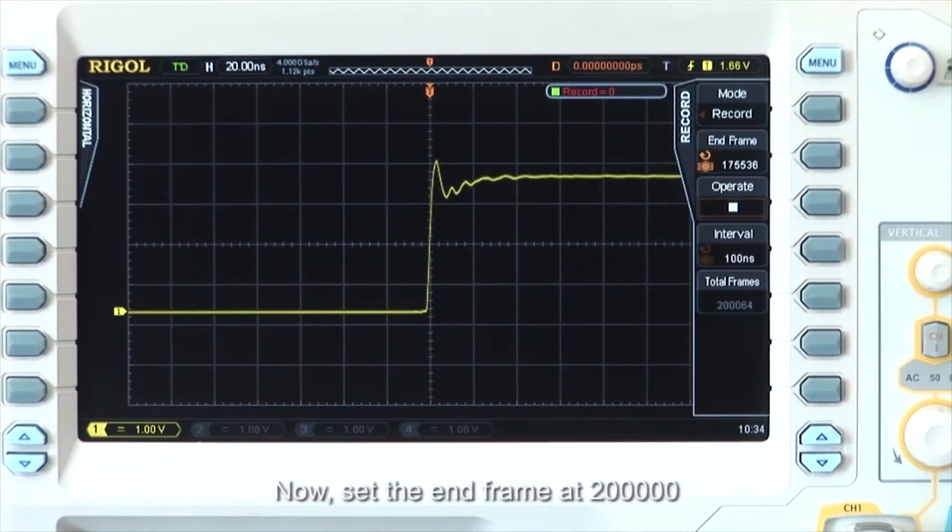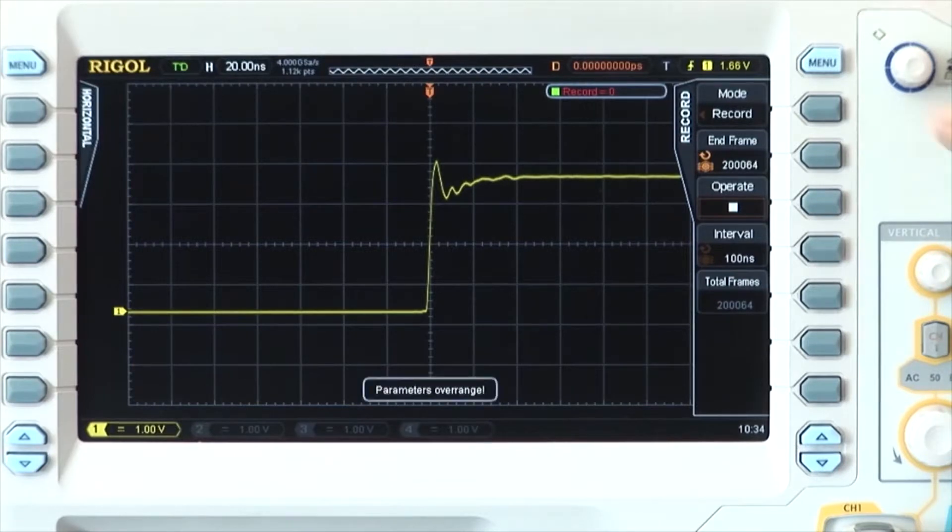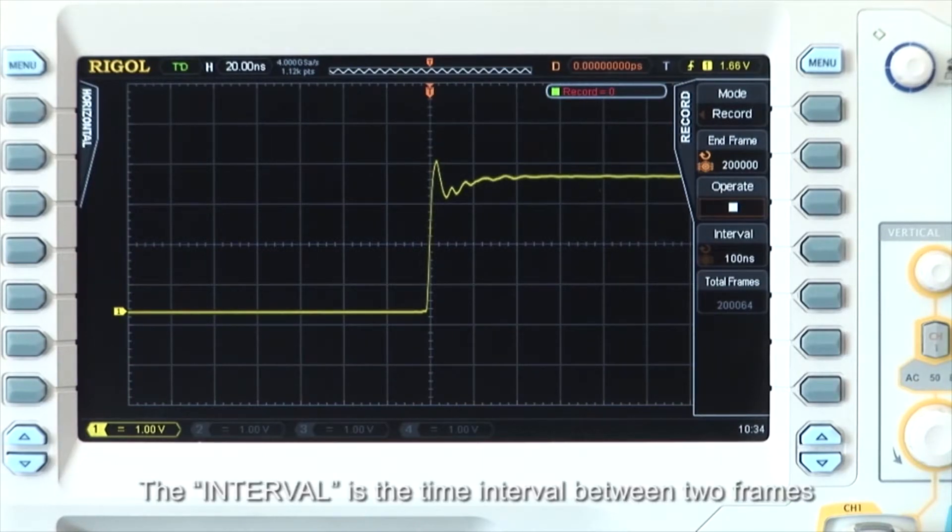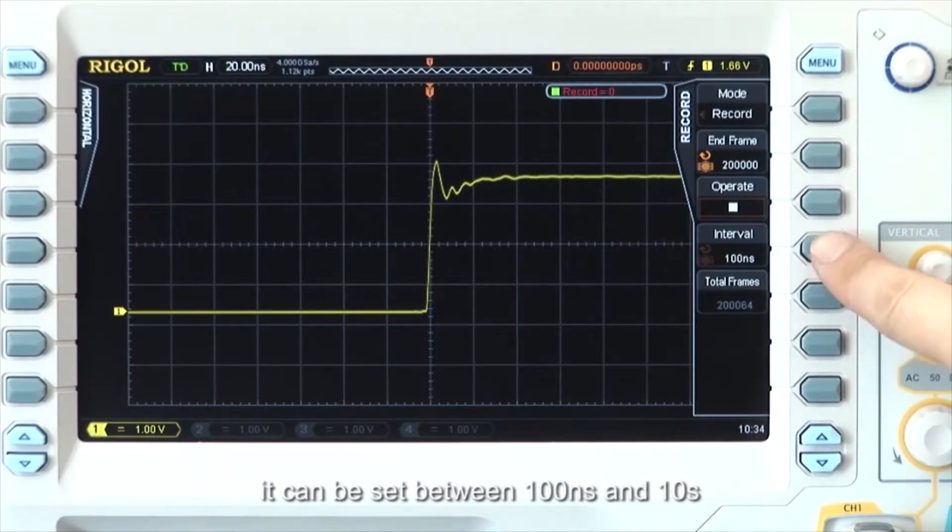Now set the end frame to 200,000. The interval is the time interval between two frames. It can be set between 100 ns and 10 seconds.